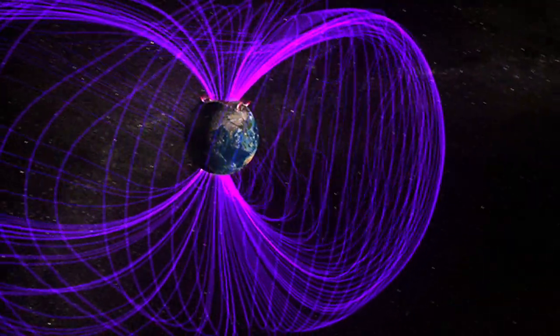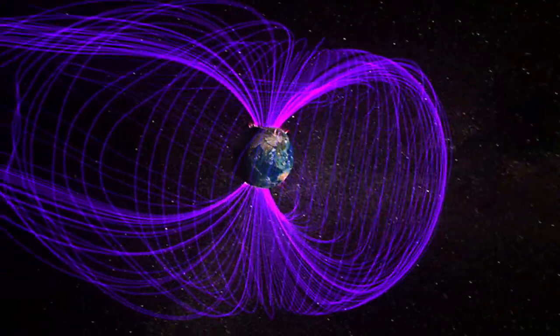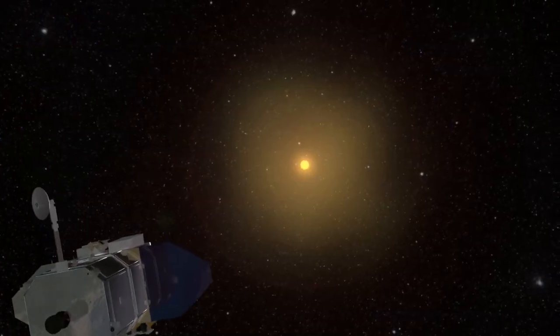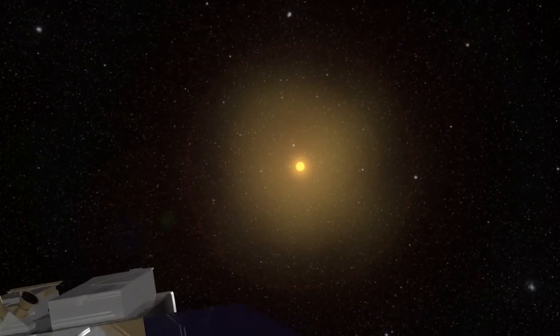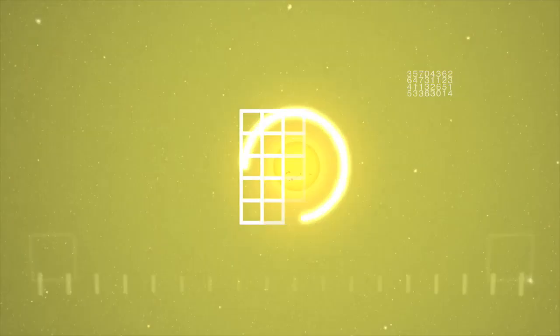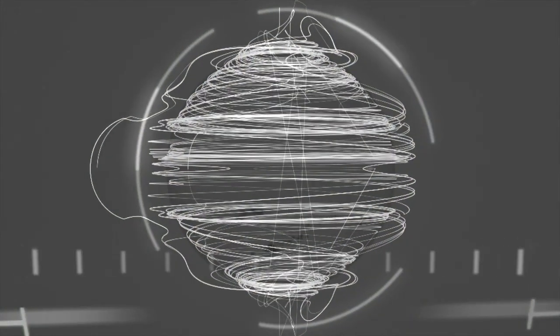We're all familiar with the magnetic field of the Earth. We use our compasses to point our way with that. On the Sun, the magnetic field is much more complicated, and it comes up as little tiny pieces of magnetic field all over the Sun.